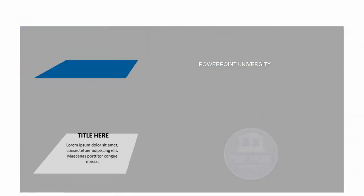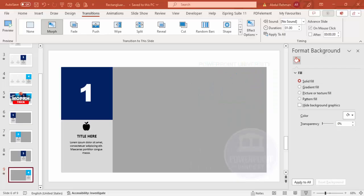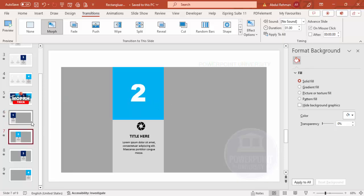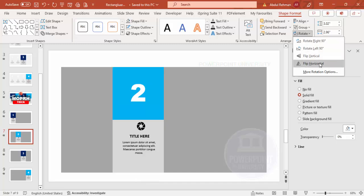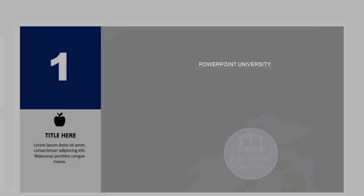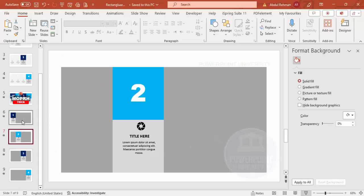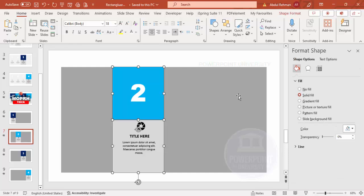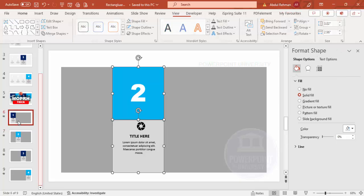Now run the slide show — you can see slide one plays something like this. If you want to change the flip direction, select the shape, go to Shape Format > Rotate, and choose Flip Horizontal. You can see how the flip direction changes. Then go back and apply Flip Vertical again to see it rotate in yet another way.